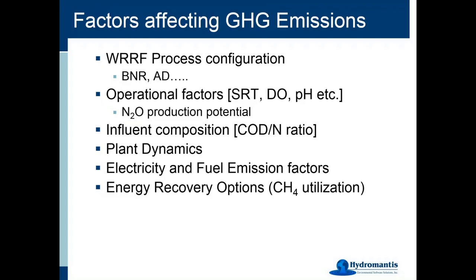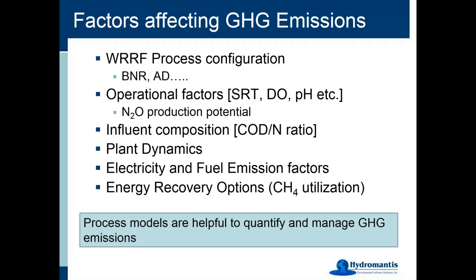Operational factors such as SRT can lead to low biomass production and more mineralization of organics, leading to higher CO2. DO and pH conditions can also affect greenhouse gas production. Influent composition — COD to nitrogen ratios — has a great effect on nitrous oxide production. Plant dynamics mean that changing operations over time will change greenhouse gas emissions. Electricity consumption and associated emission factors, and whether energy recovery options are used, all affect GHG. This is why process models are very beneficial for quantifying and minimizing emissions.